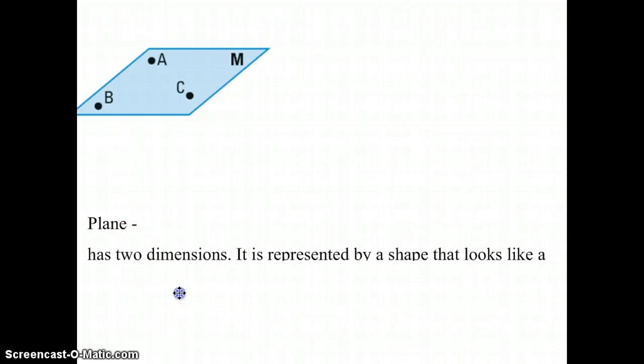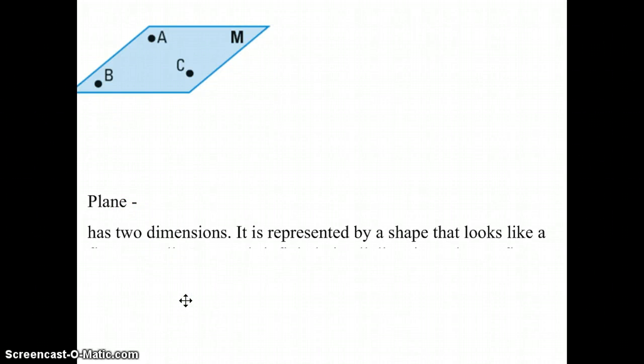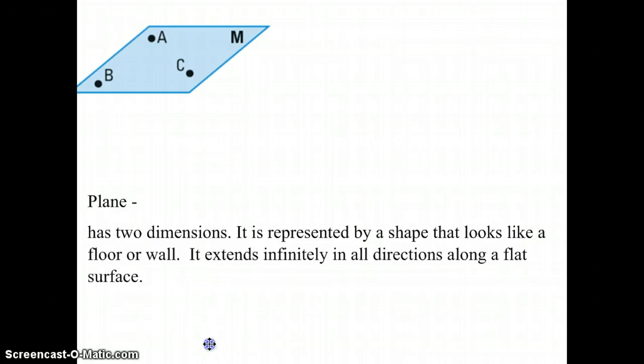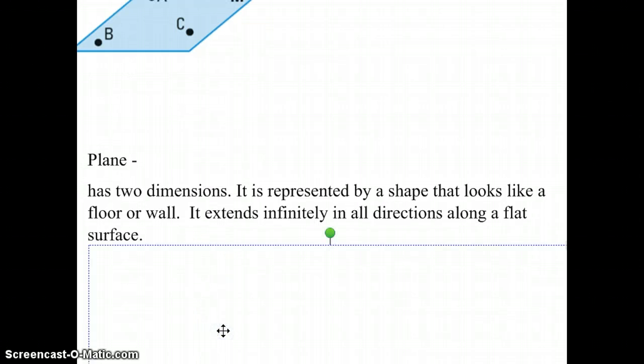The next definition we have is a plane. A plane has two dimensions. It's represented by a shape that looks like a floor or wall. It extends infinitely in all directions along a flat surface.